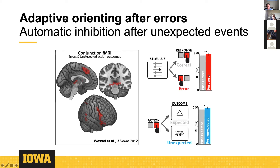That's obviously inverse inference, and we have additional evidence to suggest there is actual inhibition going on after unexpected events. You can also look at behavior for further evidence — it's well known that errors produce post-error slowing, where reaction times are slowed following error commission, and the same is true for unexpected action outcomes of otherwise correctly performed actions. This could be interpreted behaviorally as inhibition, though that doesn't confirm it.